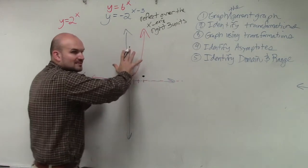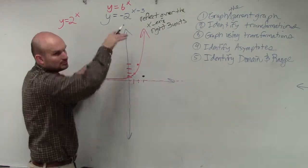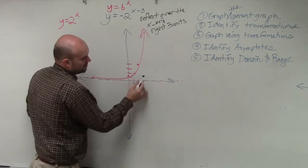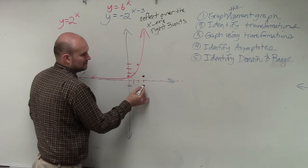When you reflect something over the x-axis from your geometry class, you remember you just flip it over, like a book reflecting it over. So really, if I'm going over three up one, now I'm going over three down one.